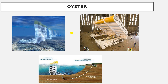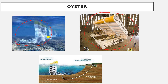Hey everyone, in this lesson we are going to discuss one of the types of wave energy conversion systems. We have in this lesson the Oyster — the one which you see here. This one is an Oyster, and this one is also an Oyster.